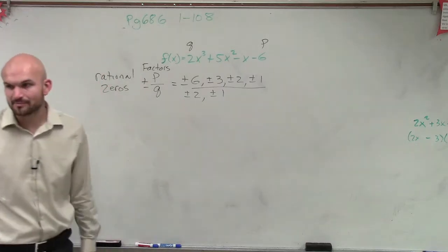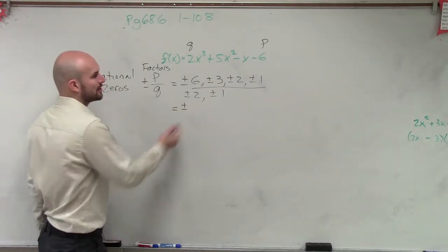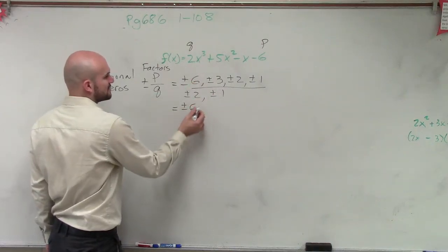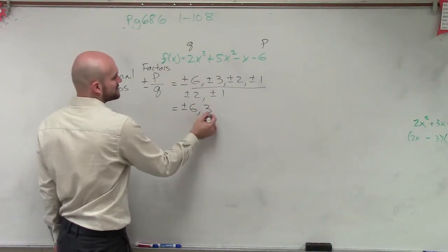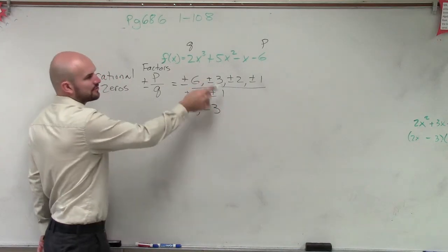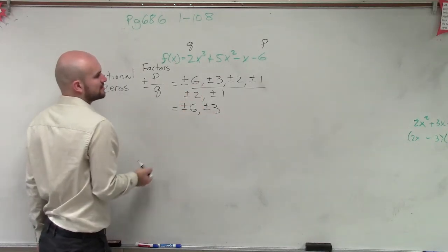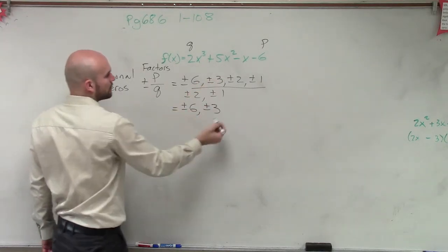So now, I just need to simplify this. Well, so what I'm going to do is I'm just going to start this in descending order. So plus or minus 6 over 1 is 6. Plus or minus 6 over 2 is 3. Now, I don't need to do 3 over 1 again, because 6 over 2 gave me 3, right? So now I can just move on to 2 over 1.